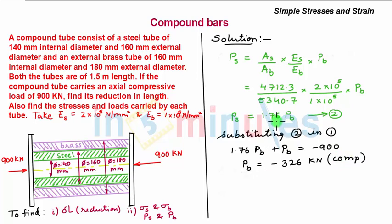Substituting this into equation 2, we get PS as 1.76 times minus 326. This comes out to be minus 573.9 kilonewtons, which is also a compressive load.